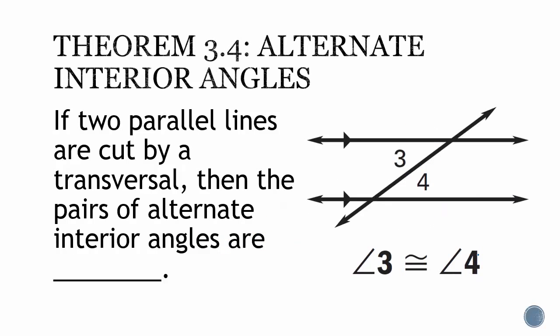Theorem 3.4, alternate interior angles. If two parallel lines are cut by a transversal, then the pair of alternate interior angles are congruent. If I drew my letter Z, notice that angle 3 and angle 4 are within the letter Z. Another way to look at it is that angle 3 and angle 4 are inside the parallel lines and on opposite sides of the transversal, so they're alternate interior angles and have the same measure because they are congruent.